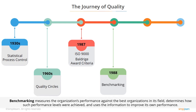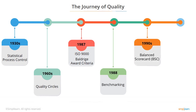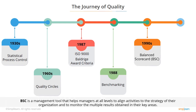Benchmarking is an improvement process where an organization measures its performance against the best organizations in its field, determines how such performance levels were achieved, and uses the information to improve its own performance. During the 1990s, the Balanced Scorecard, or BSC, was introduced. It is a management tool that helps managers at all levels to align activities to the strategy of their organization and to monitor the multiple results obtained in their key areas.